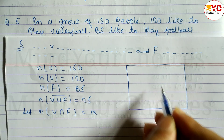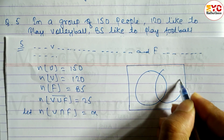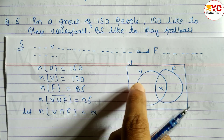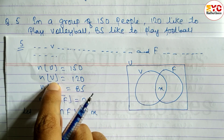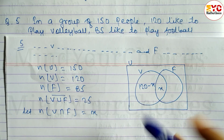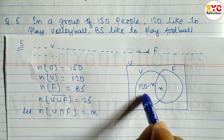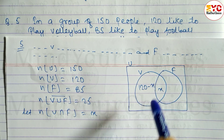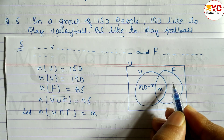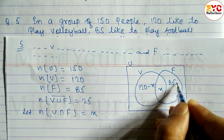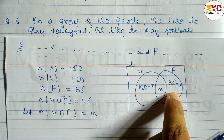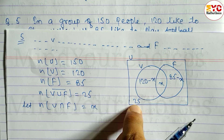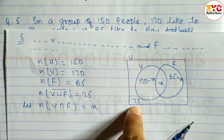Draw the Venn diagram: one circle for volleyball, one circle for football. In the intersection, we write X. Only volleyball is 120 minus X, only football is 85 minus X. The 25 people who don't like either game are written outside both circles.